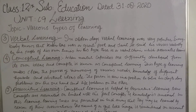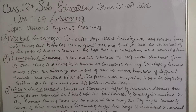Number four: conceptual learning. When mental capacities are sufficiently developed to form its own ideas and concepts, it is known as conceptual learning. This type of learning also makes clear the process of memorizing various words, knowledge of different symbols, and abstract ideas. The learning becomes the power of thinking and judgment development. The person is now in a position to solve his day-to-day problems on the one hand and life problems on the other.